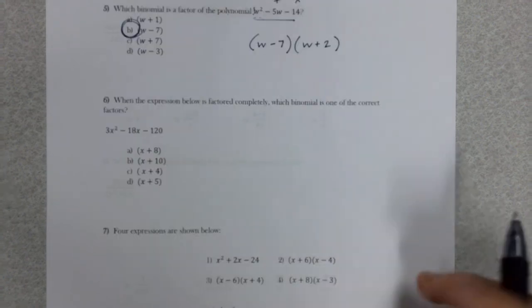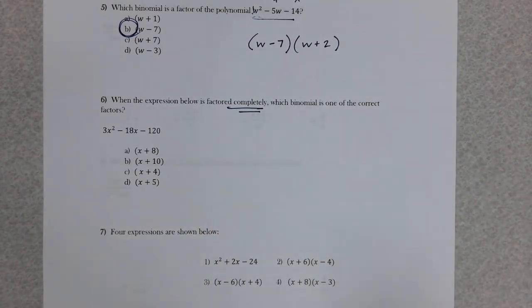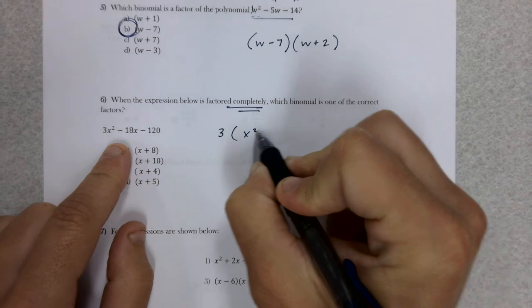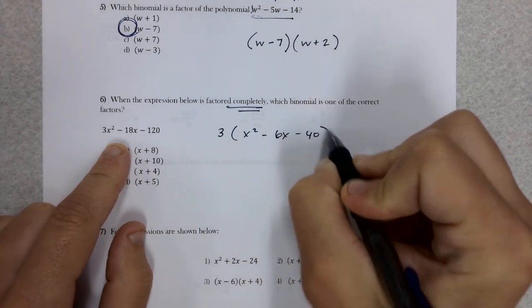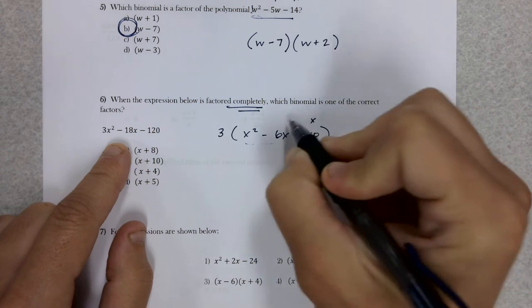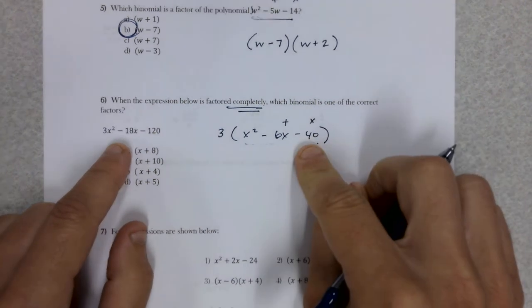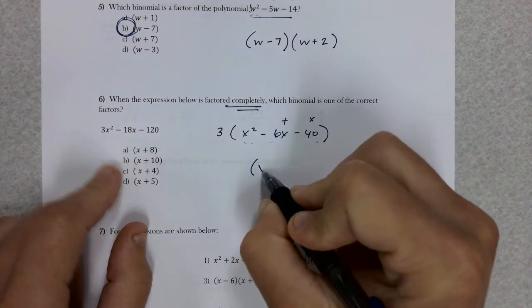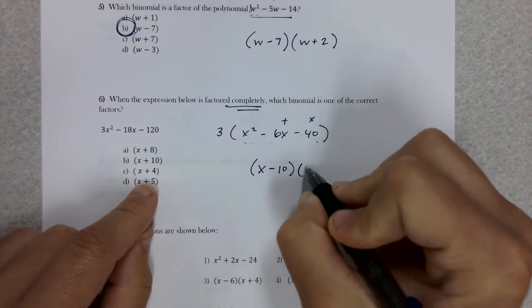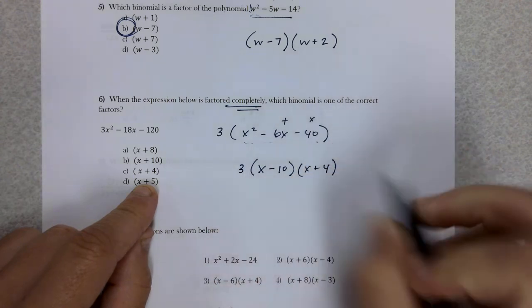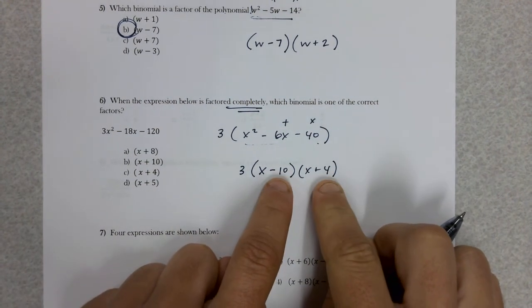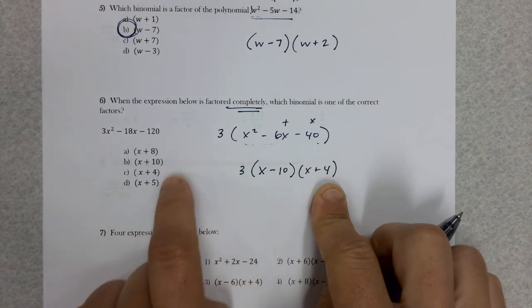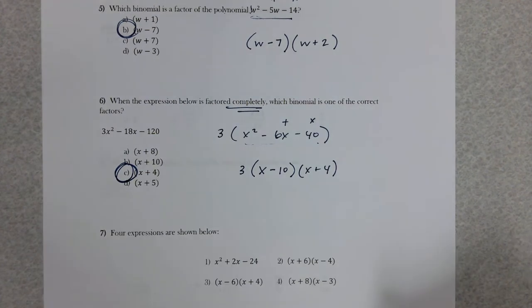Number six, when it's factored completely. That's a key word to tell you that you might have to factor this more than once. Look for GCFs. I have a GCF of a 3, and then what's left over in parentheses looks like one of those trinomials again. What multiplies to give you negative 40 and adds to give you 6? That seems like minus 10 and plus 4. Letter C would be my answer.